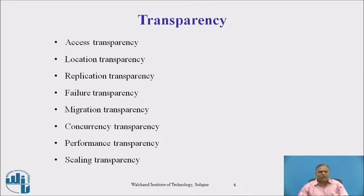Concurrency transparency means each user has the feel that he or she is the sole user of the system and no other user exists. For this, the resource sharing mechanism should have four properties: event ordering, mutual exclusion, no starvation, and no deadlock. Mutual exclusion means two processes are accessing the same resource at the same time.